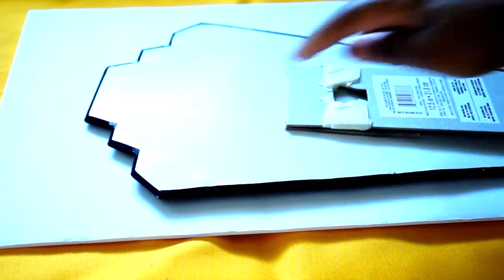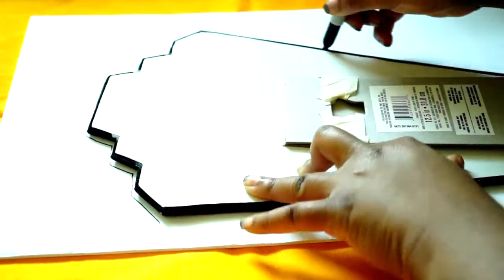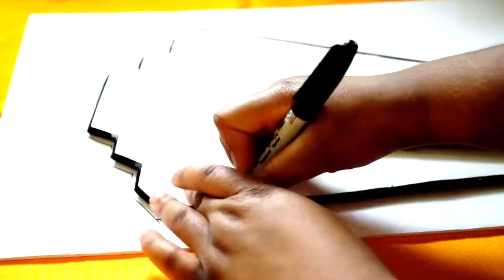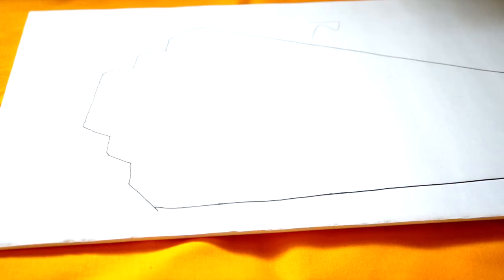Start by tracing or drawing your template onto your cardboard using a marker or pen. I just traced a display that I already had. I'll put a link in the description as well for your own template to download. My display is about 12 and a half inches high.